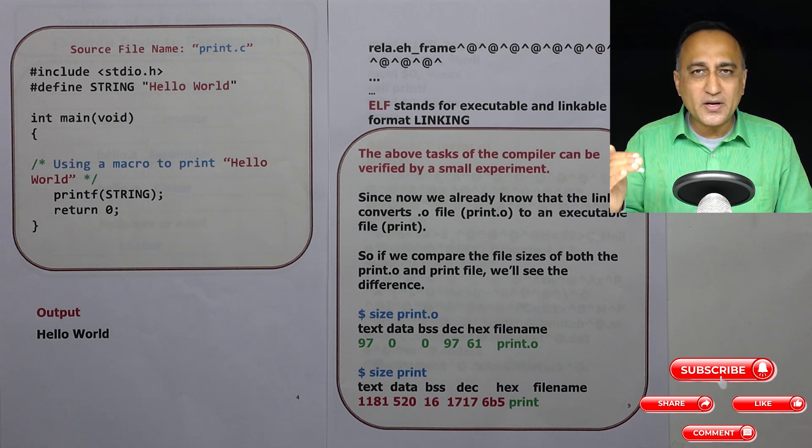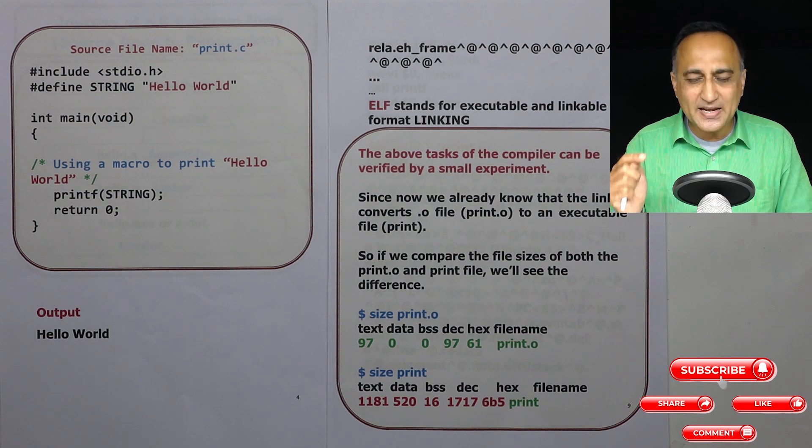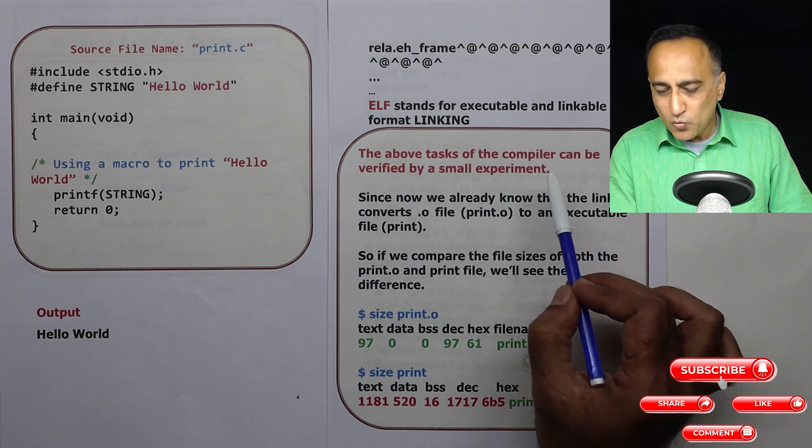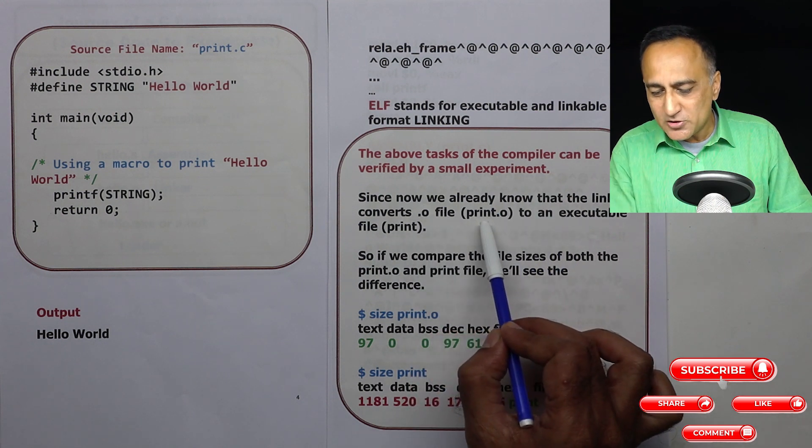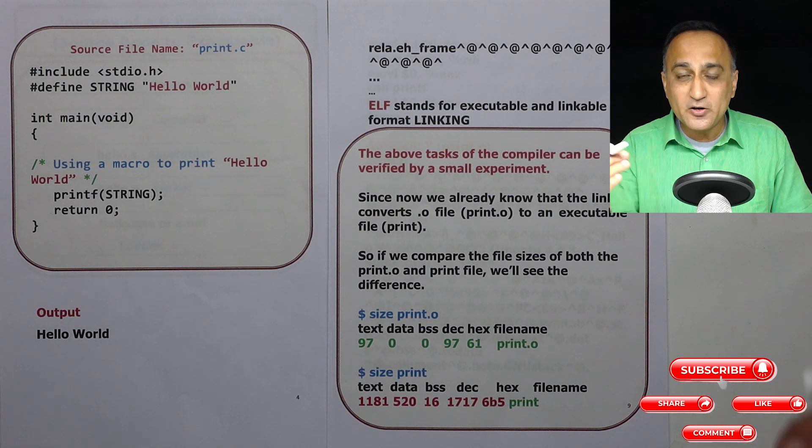You need to understand when you create a file called print.c you have not written the code for printf. The code for printf exists in a library file with the file extensions ending as .lib or .a. So look for .a or .lib files in the directory where your compiler is installed. In some of those directories you will find these library code. So what we are doing is since we have produced a file called print.o we will see how it is converted into a print.exe or a.out on Linux or Unix.